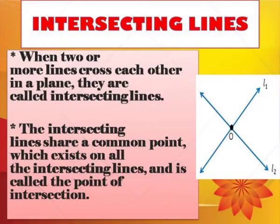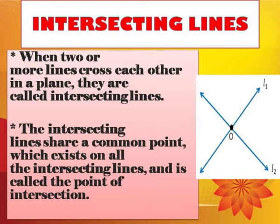Intersecting lines: when two or more lines cross each other in a plane, they are called intersecting lines. Here you can see in the figure that lines L1 and L2 are intersecting, which means meeting at a common point. Hence L1 and L2 are intersecting lines, meeting at a common point O, which is called the point of intersection.